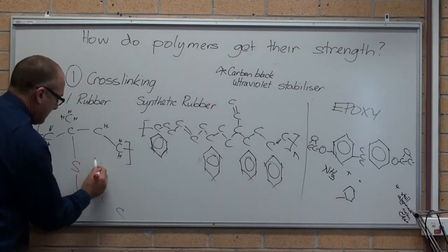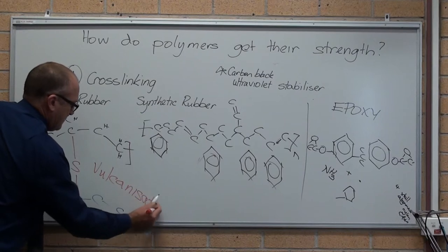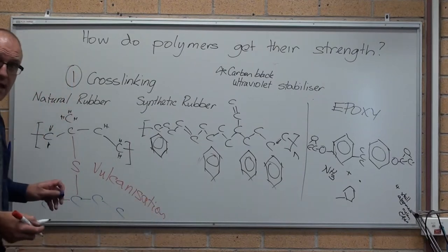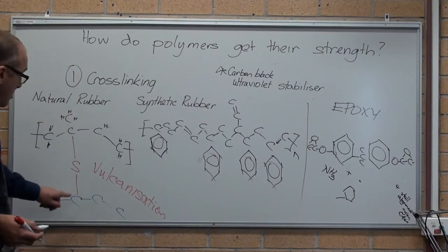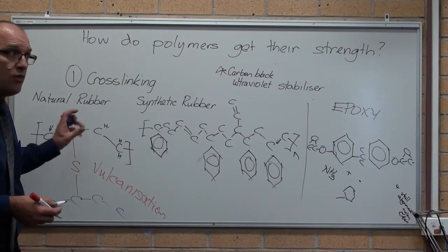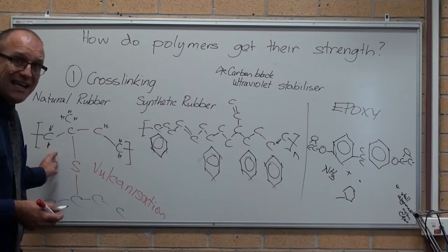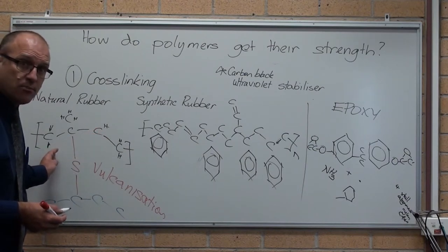Let me write it down. So vulcanisation of a rubber puts cross-links in. The more sulphur you add, the more rigid it is. It's more highly vulcanised is the term that's used.